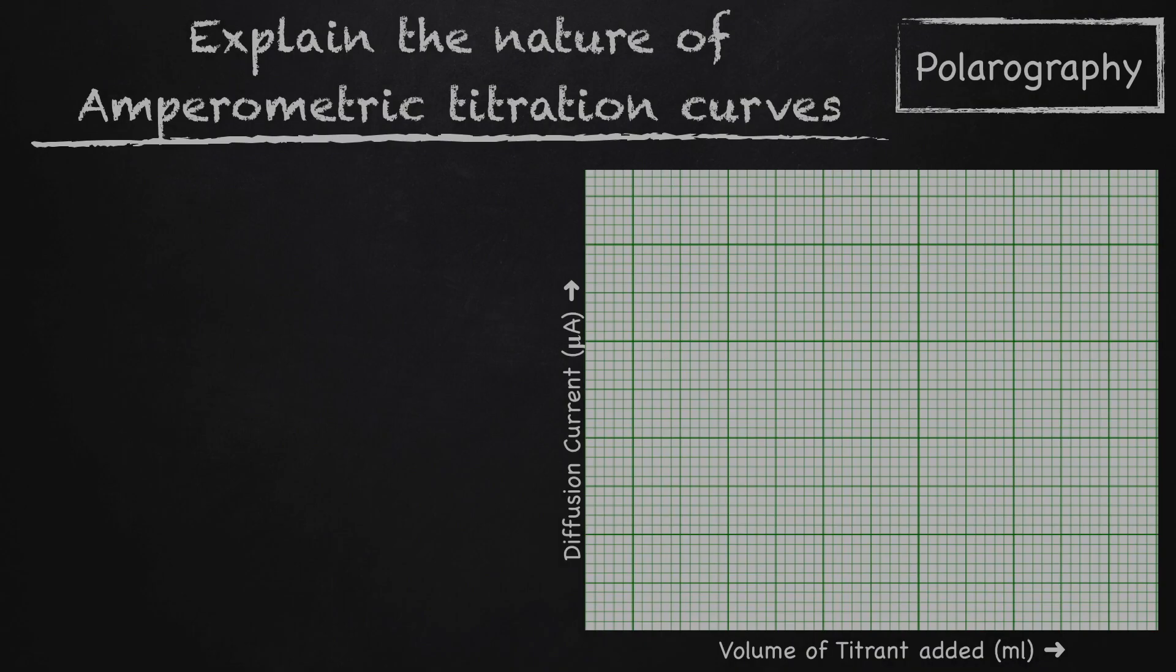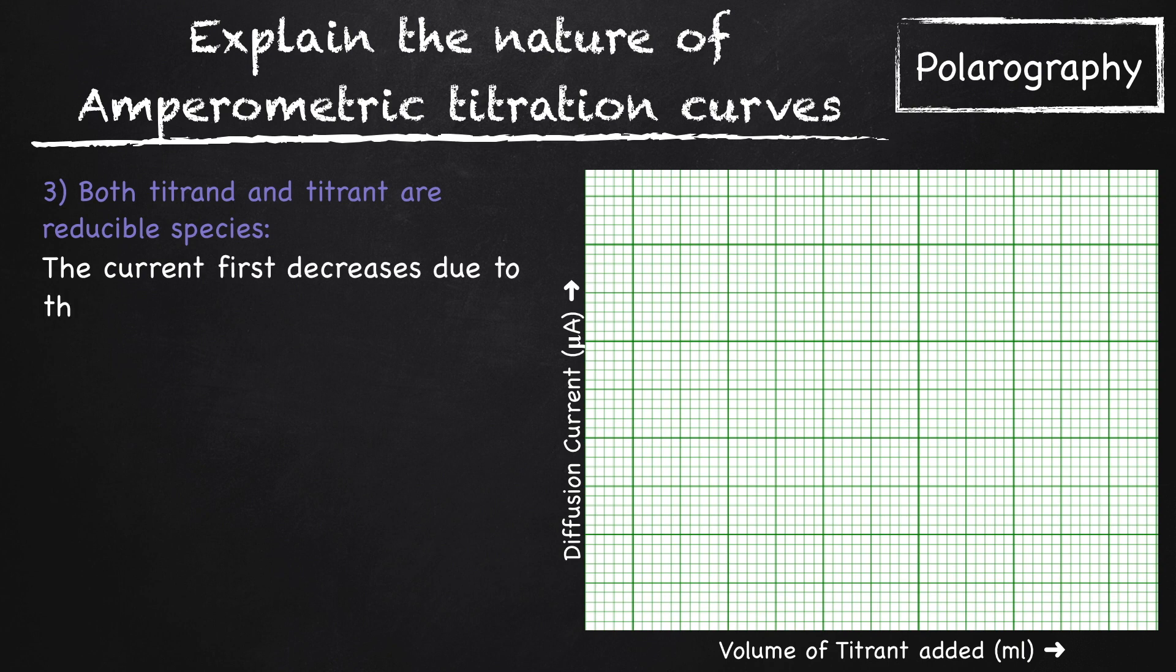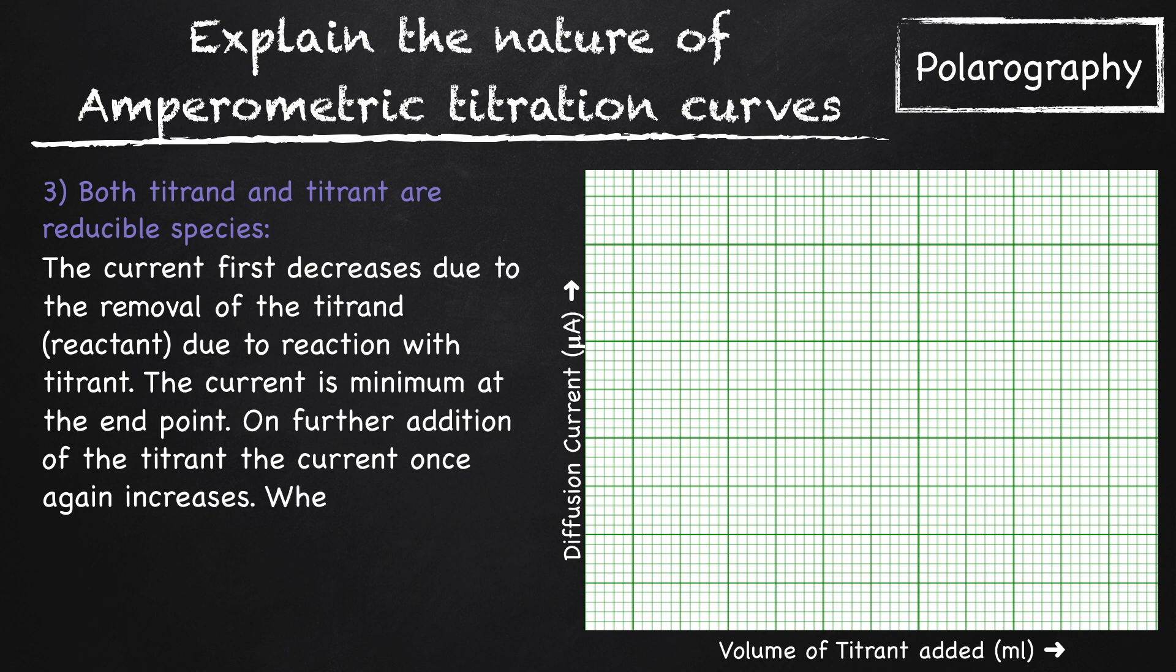And the last case is both titrand and titrant are reducible species. In this case, the current first decreases due to removal of the titrand or reactant due to reaction with titrant. The current is minimum at the end point. On further addition of the titrant, the current once again increases. When we plot a graph of current versus volume of titrant added, thus, a V-shaped curve is obtained.